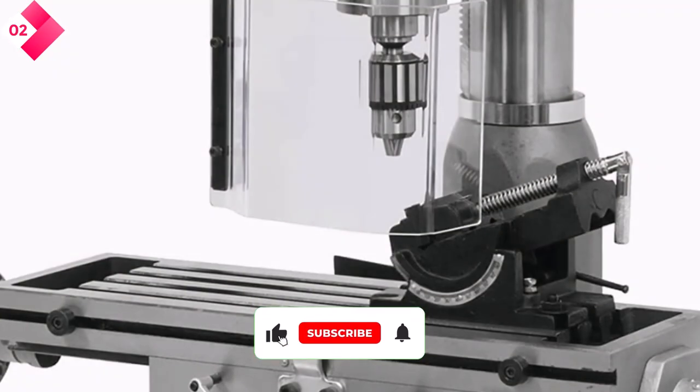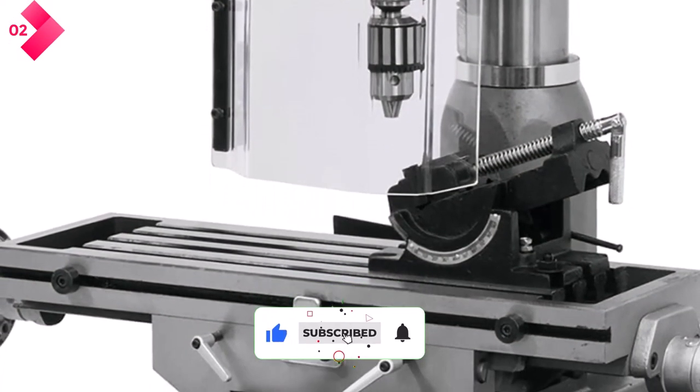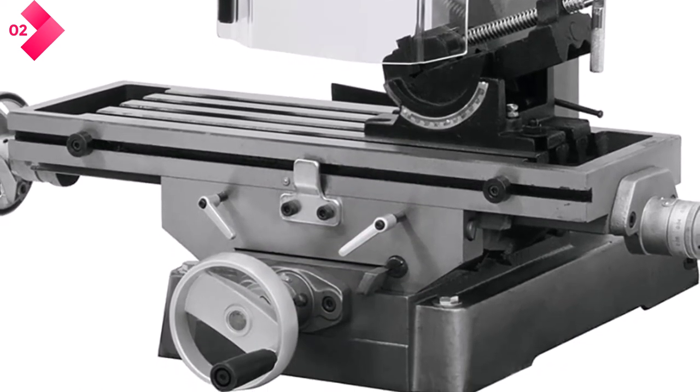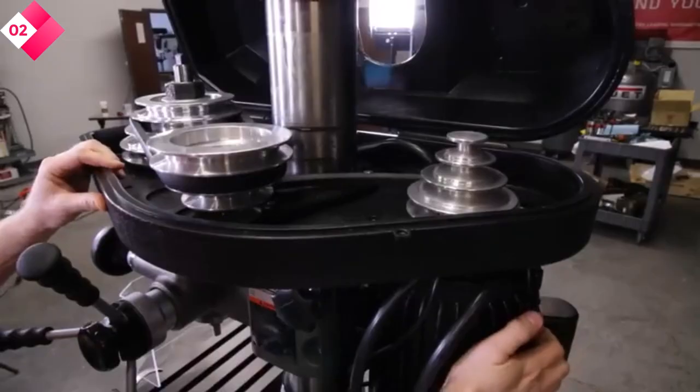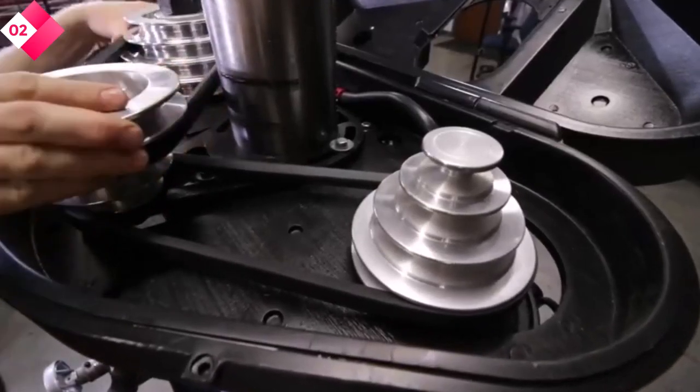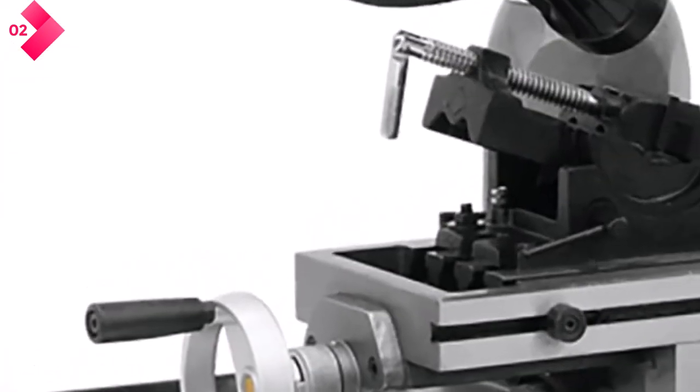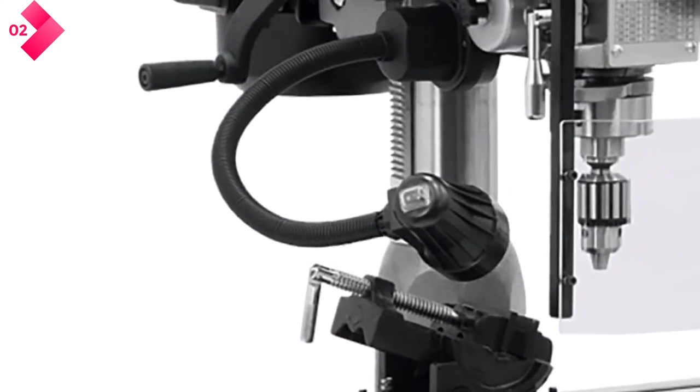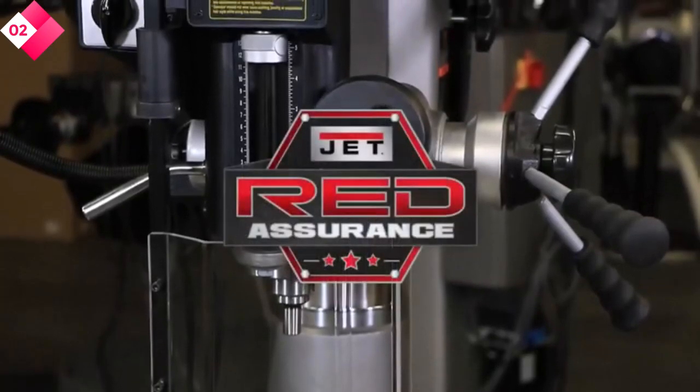Pros: versatile dual functionality for both milling and drilling operations, powerful motor provides ample torque and speed for efficient machining, adjustable speed range for versatile machining across different materials. Cons: relatively larger footprint compared to standalone milling or drilling machines, may require additional tooling and accessories for specific machining tasks.